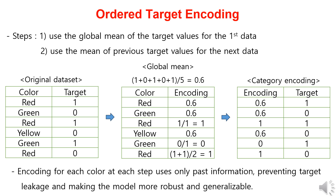Let's explain ordered target encoding with an example involving three color categories — red, green, yellow — and a binary target variable. In ordered target encoding, the categorical variable is replaced by the mean of the corresponding previous target values. For the first data point, the global mean of 0.6 is used. The second red is replaced by the mean of the previous red value, which is 1. The third red is replaced by the mean of the previous two red values, both with target 1, so the mean is 1. Similarly, the first green is replaced by the global mean of 0.6, and the second green by the mean of the previous green value, which is 0. In this way, categorical data is encoded into numerical form.